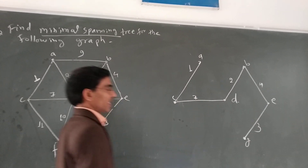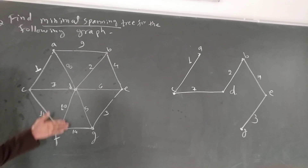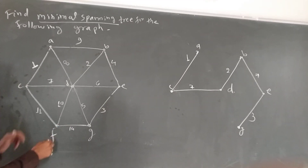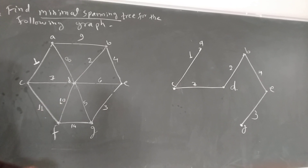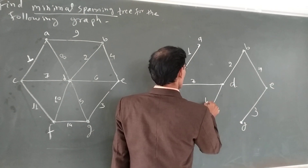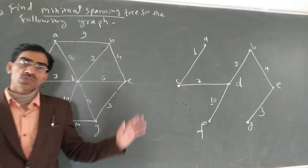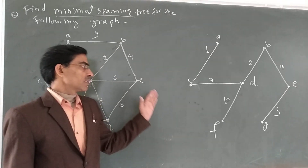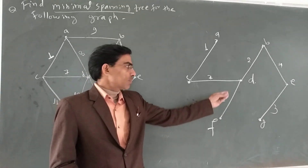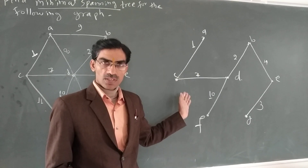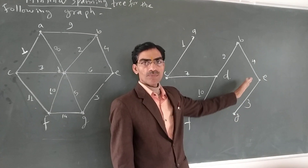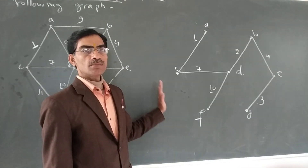अब 6 vertices आ चुके हैं: D, B, E, G, C, A। अब F को include करना है। D से F का weight 10 है, G से 14 है, C से 11 है — इनमें minimum 10 है। तो DF edge लेते हैं। अब आपको वही minimal spanning tree मिला जो Kruskal's algorithm से निकाला था। Prim's algorithm में किसी भी vertex से शुरू करें, incident edges में minimum weight वाले को include करते जाएं और सभी vertices cover होने तक repeat करें।